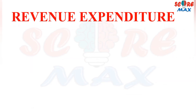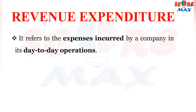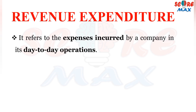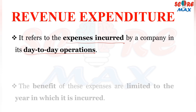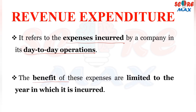Now, the next type of expenditure is revenue expenditure. Revenue expenditure refers to expenses incurred for the day-to-day operations of the business. The benefit of these expenses is limited to the year in which they are incurred. For example, rent — when we pay rent, in that same year only we get the benefit of that rent.